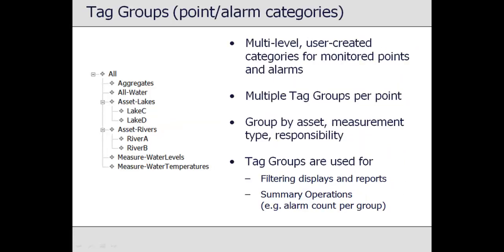Although not required, the monitored points can be placed into user-created categories called tag groups. Groups may be created based on a point's physical location, associated asset, or measurement type. Once created, tag groups are used throughout Top View whenever point or alarm filtering is needed, including local and remote displays of values and alarms, current and historical alarm reports, and operations for group statistics.